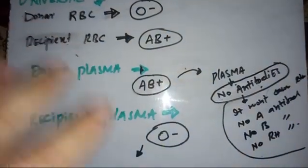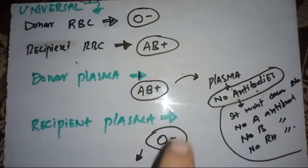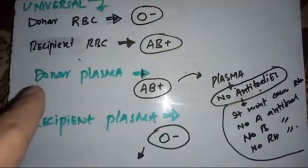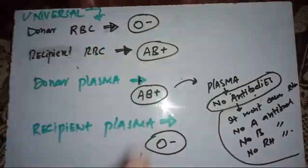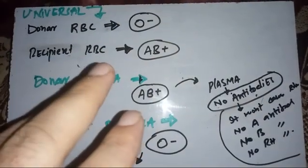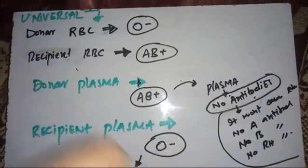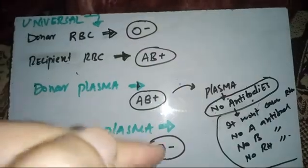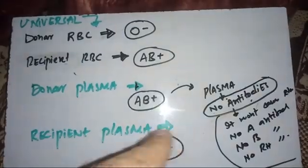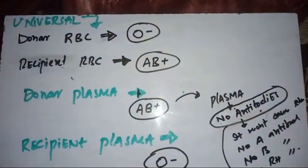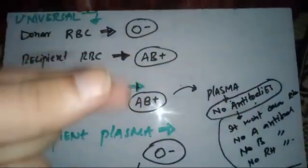For the universal recipient of plasma, O negative is the only blood that can receive plasma from all blood groups. We need a blood group with no antigen in this context, because the antibodies in plasma act as antigens. O negative has no A, B, or Rh antigen, so there is no target for the antibodies in any donated plasma. An easy way to remember: for donor RBC and recipient RBC, follow the standard rules; for donor plasma and recipient plasma, simply reverse that order.